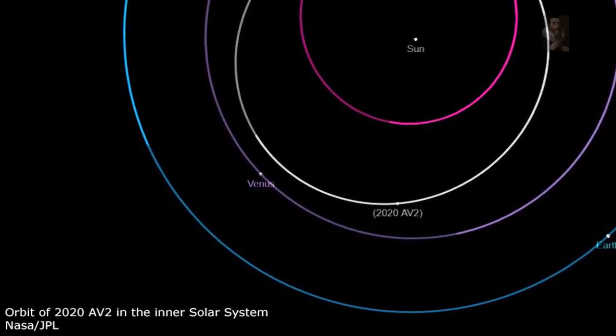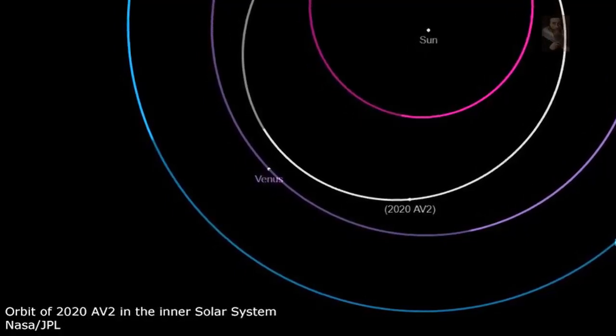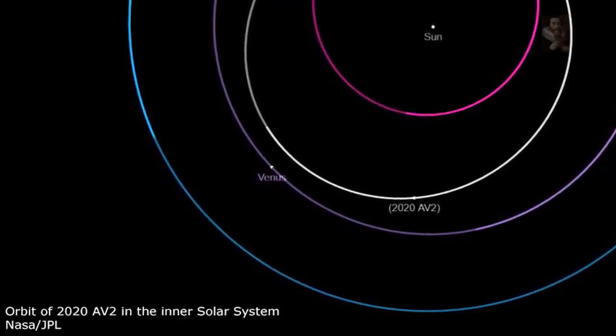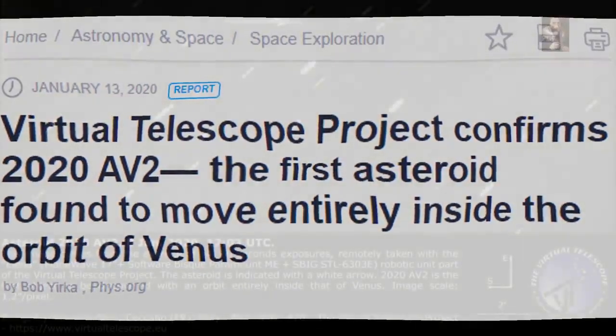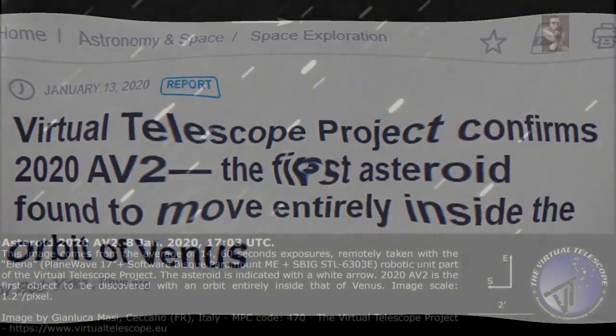He noted that the process of photographing the asteroid was difficult because it was low in the sky, and the sky was not very dark, and there was a full moon. Despite the difficulty, Masi reports that he was able to capture multiple images of the asteroid, which he combined to account for the object's motion.